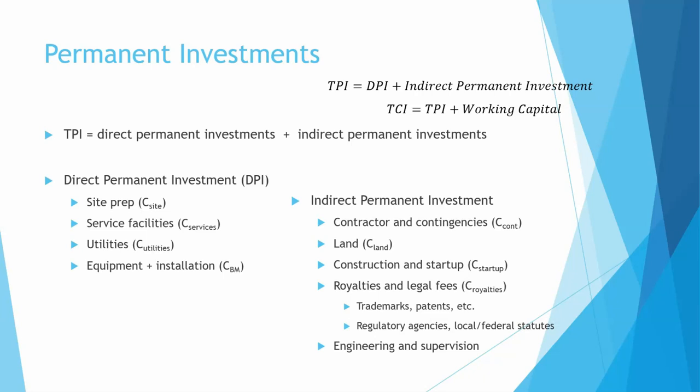Indirect stuff is going to be things not directly related to your process, but you still have to pay. That's construction costs, engineers that construct it, supervision for them, any land costs, regulatory agencies and local and federal laws they have to abide by, any trademarks and royalties you have to pay while doing all this stuff. This is indirect.